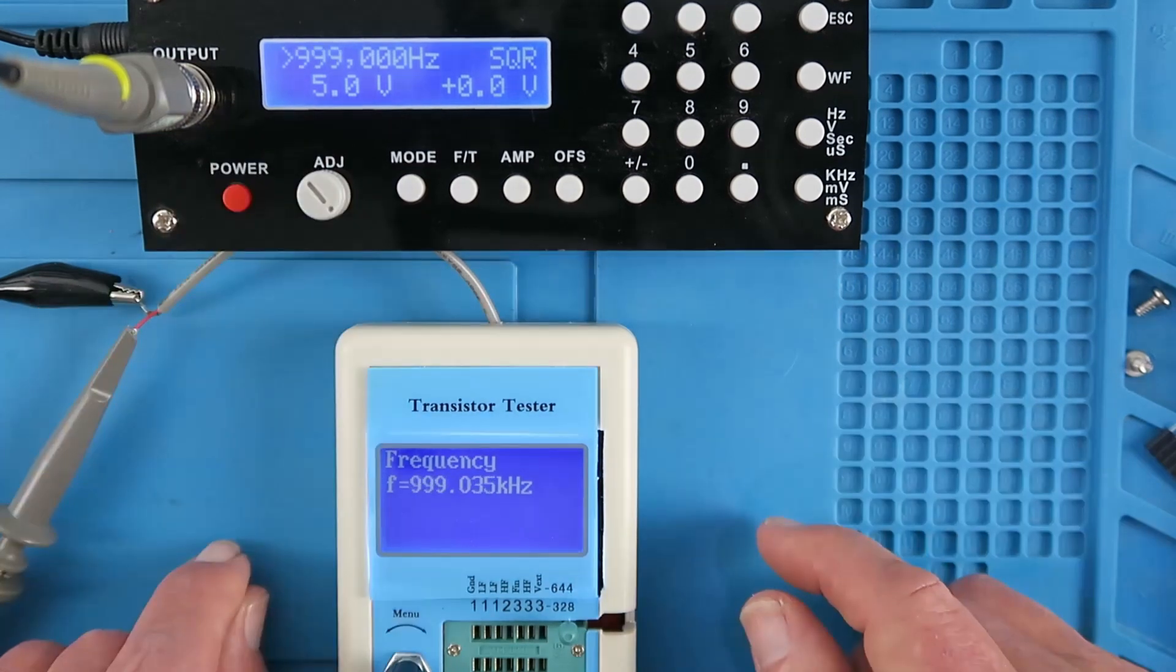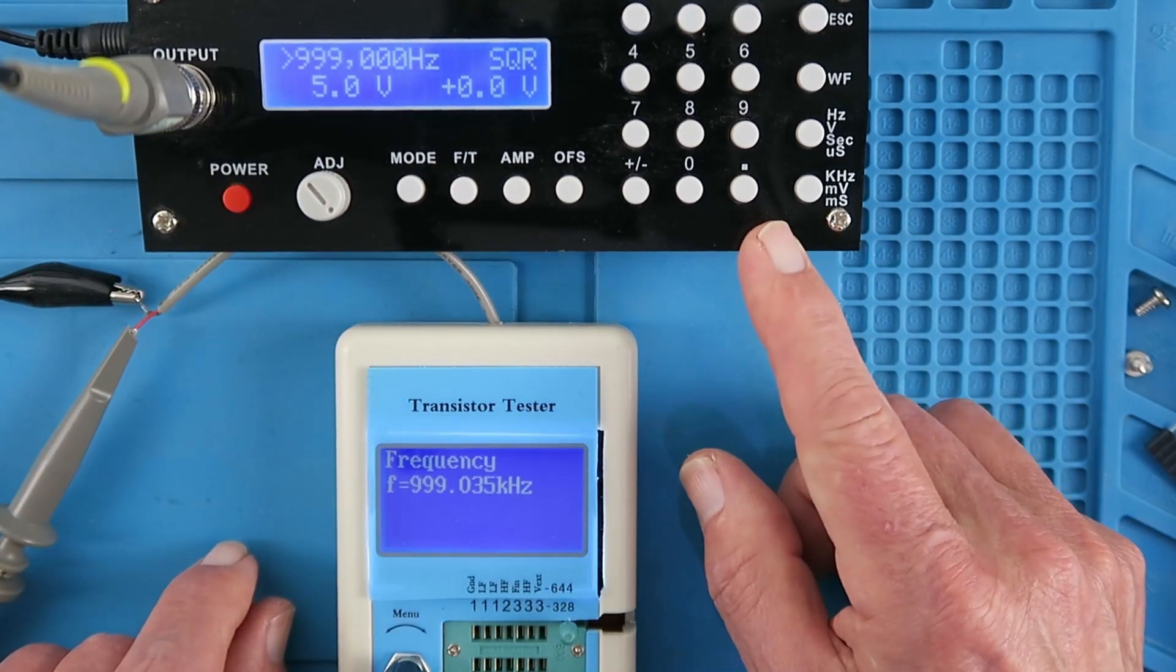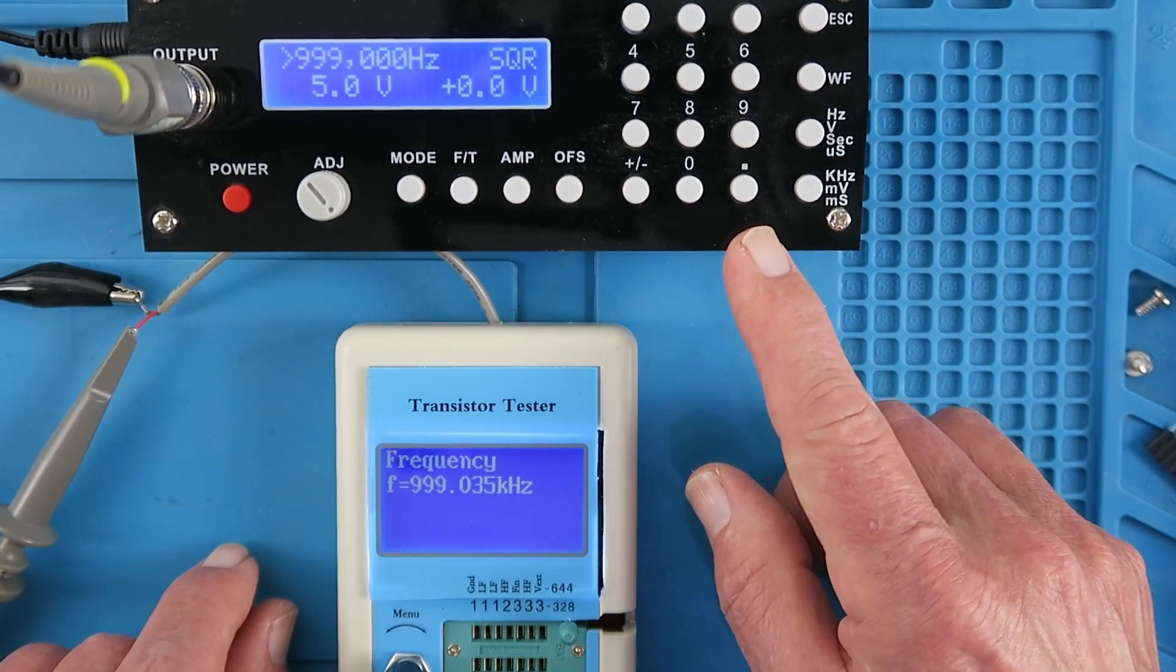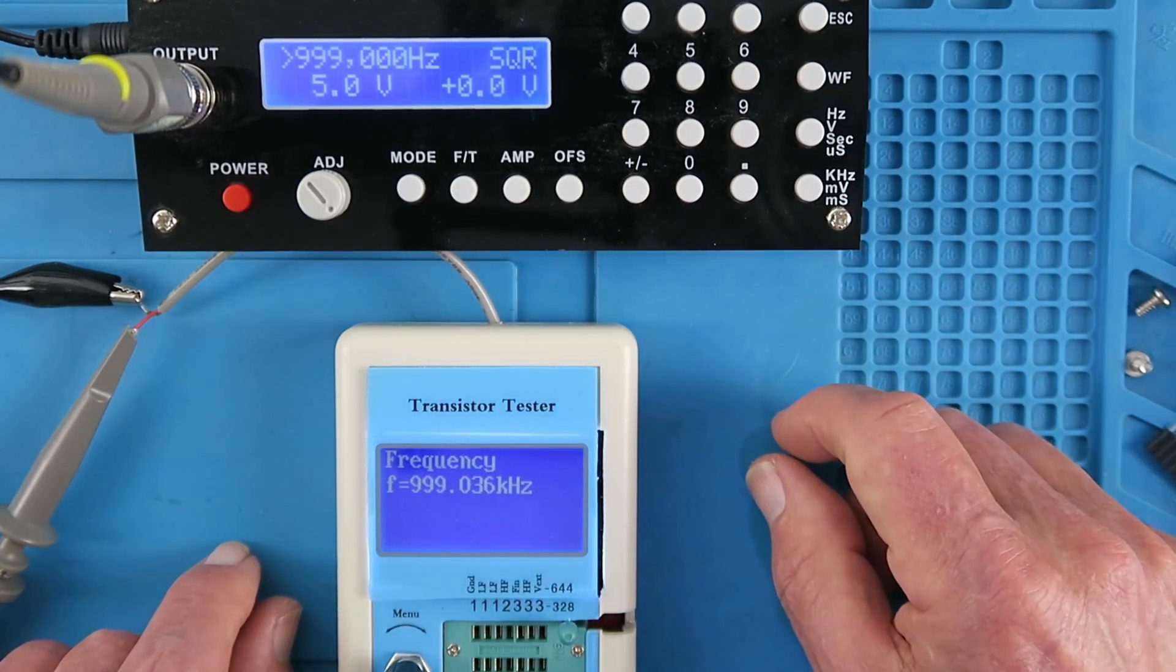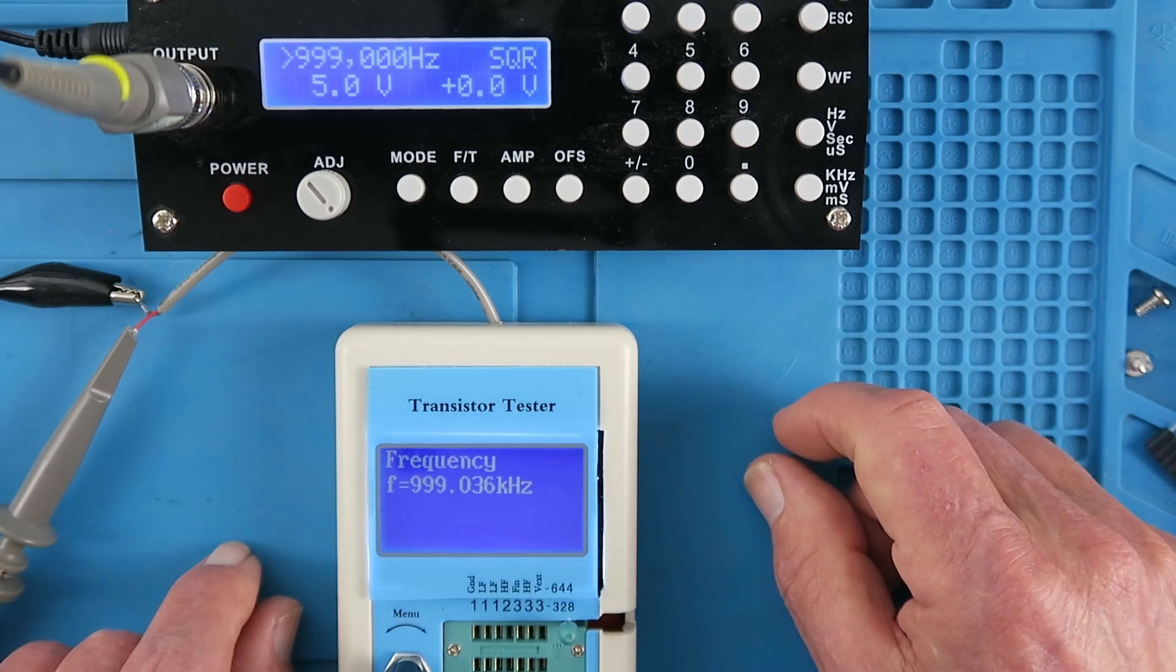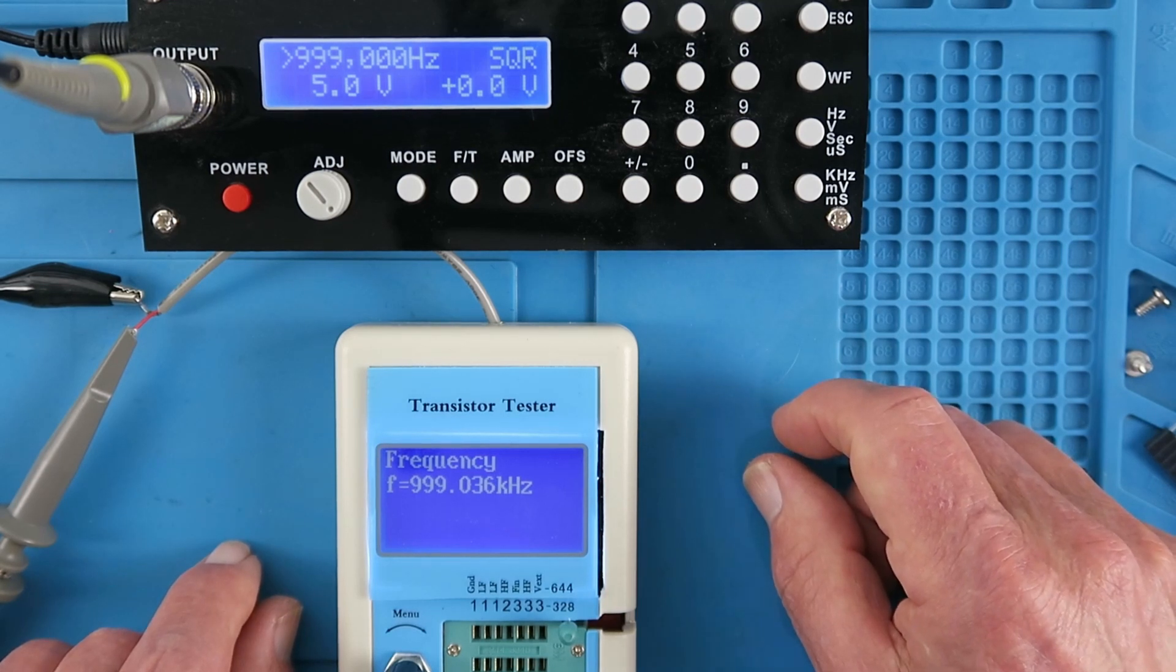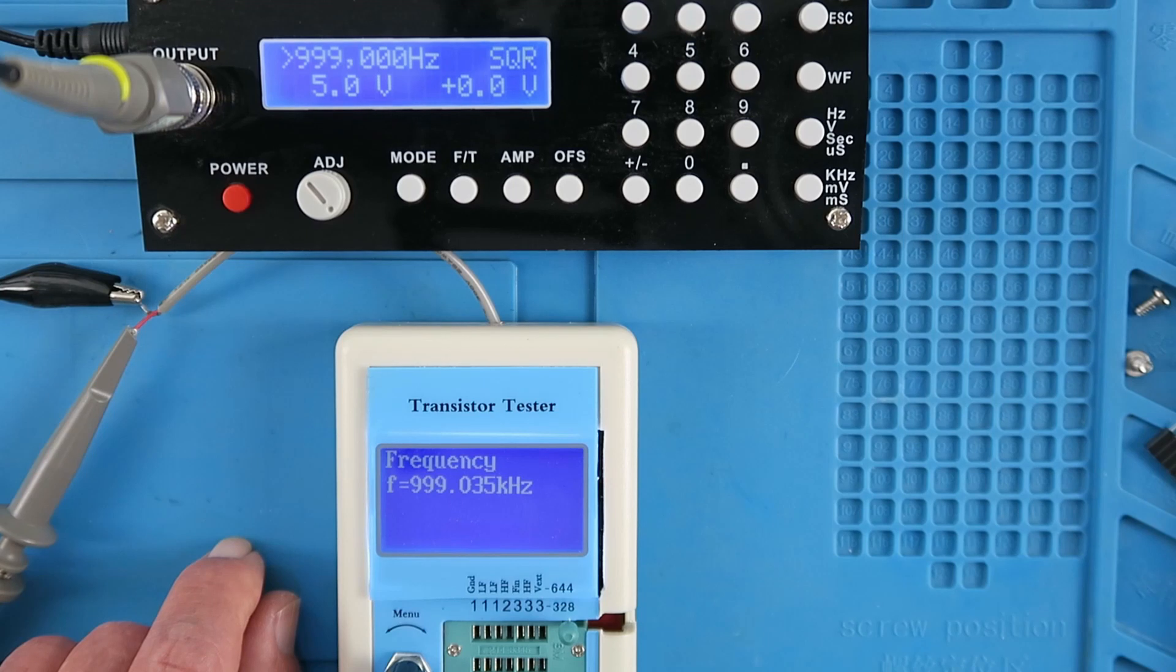Let's go for broke. So it appears that the function generator can go up to just about 1MHz. What the upper limit of the tester is, I don't know. If anybody knows what the upper frequency limit of the tester is, then again, please leave a comment.